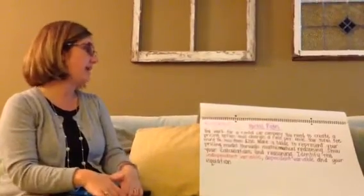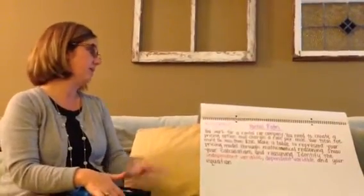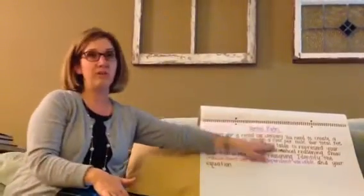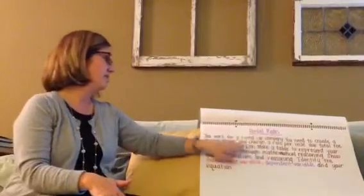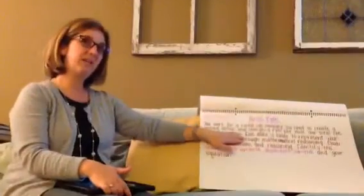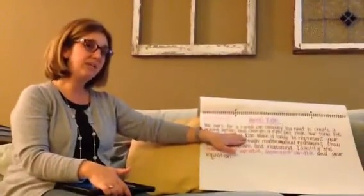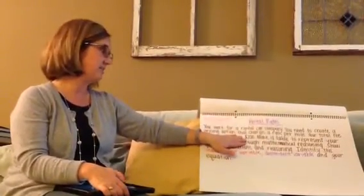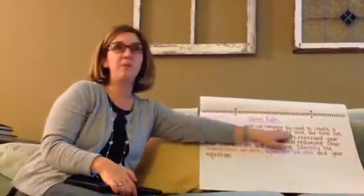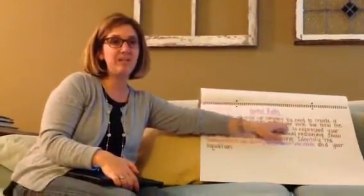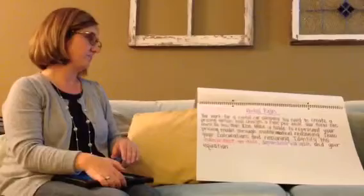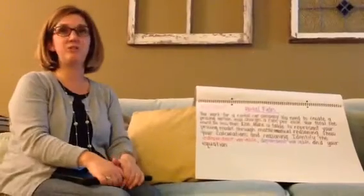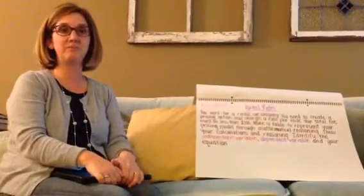Let's think about what's happening here. Make sure you make your table. Think about the money — is it independent or dependent? Think about the amount of miles — is it independent or dependent? I'm going to let you show what you know.